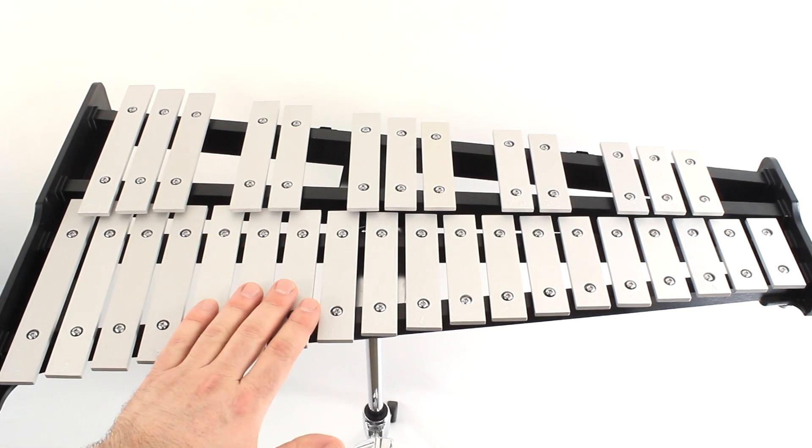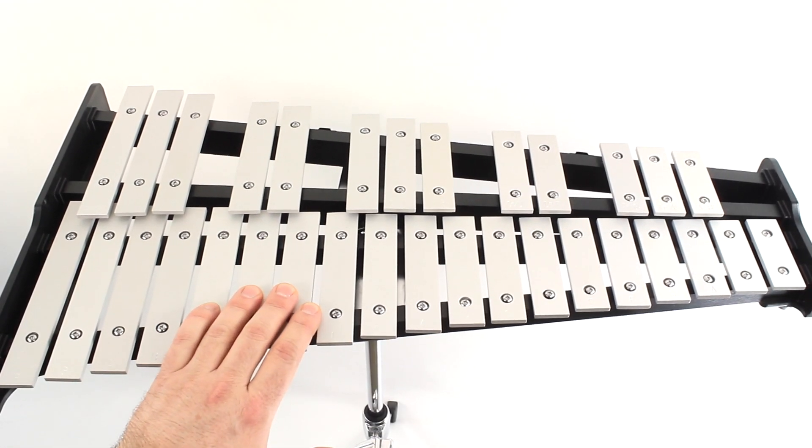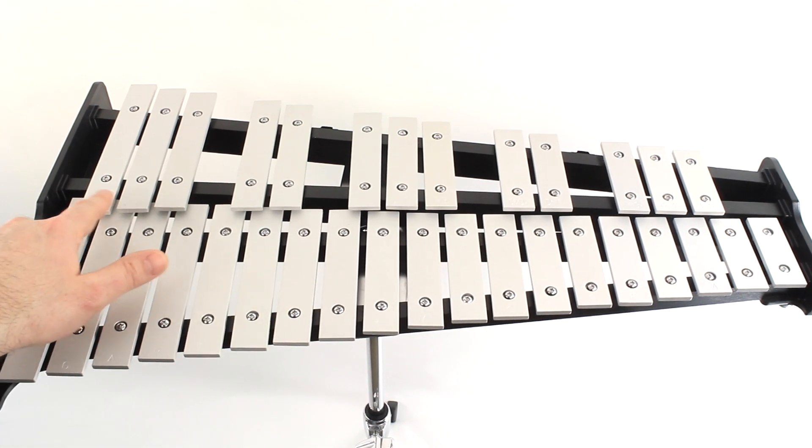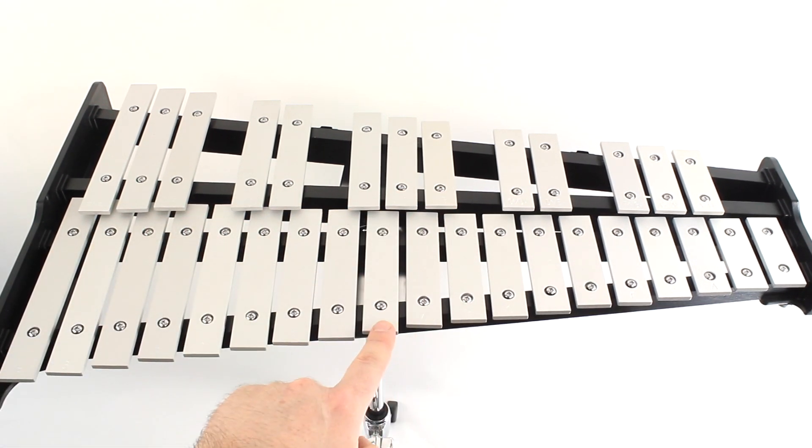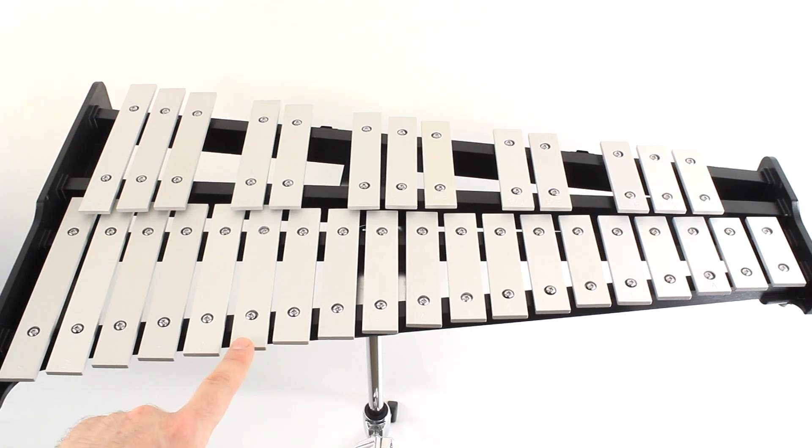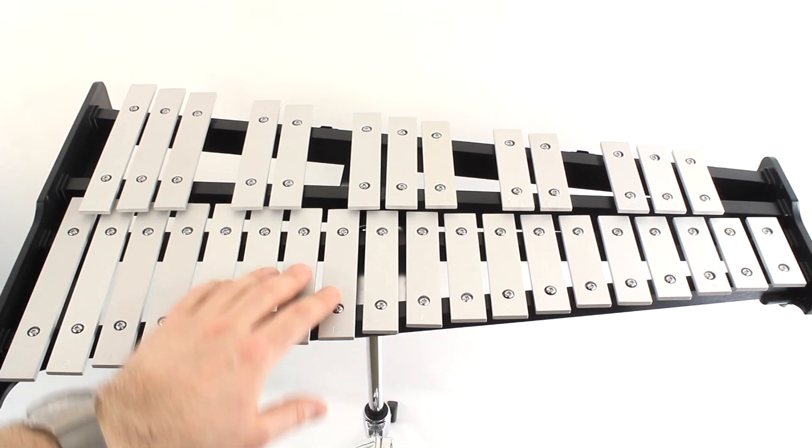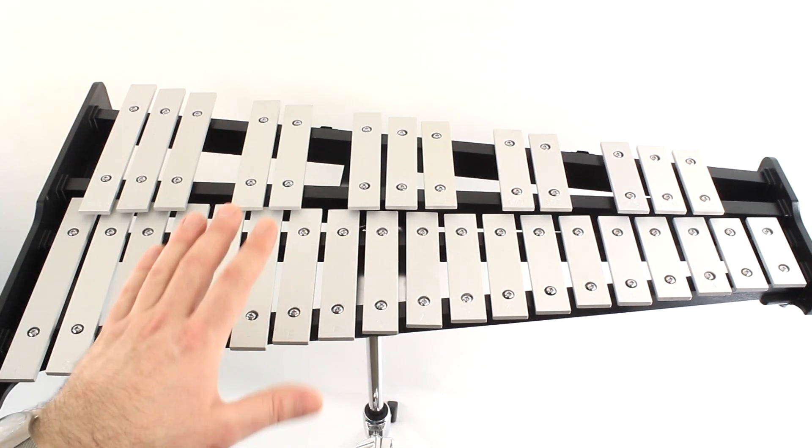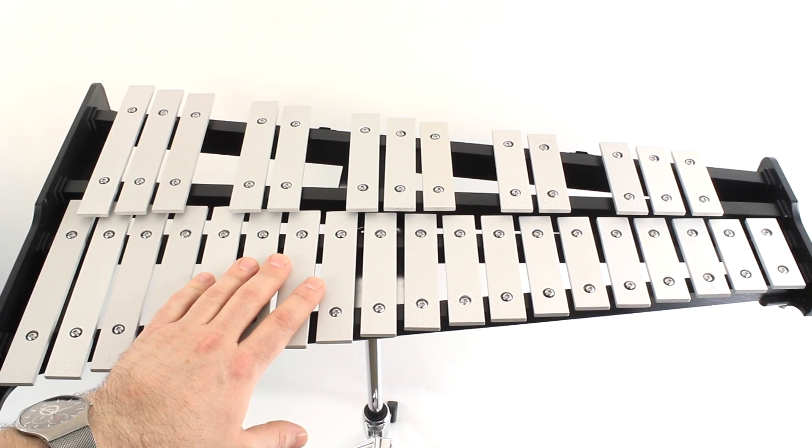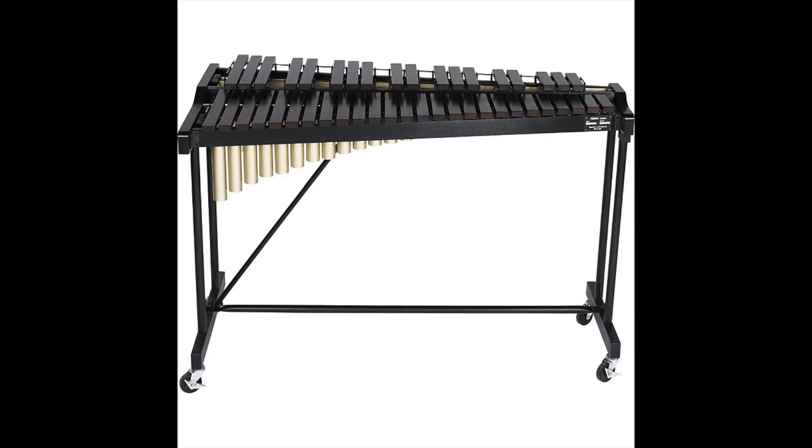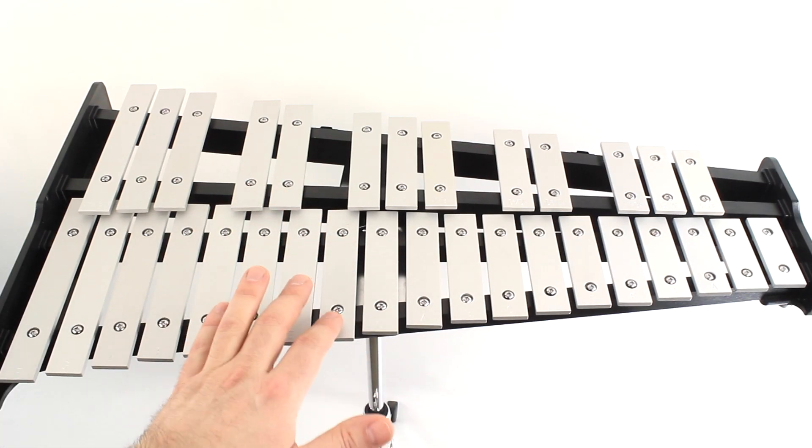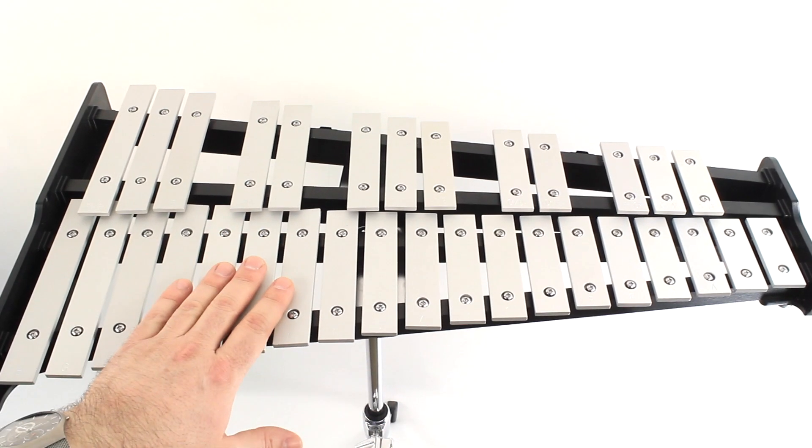Now let's talk about how we find individual notes on our bells. Some bell kits have the note names engraved right on the tone bars. Your bell kit might have the notes engraved on there or they might be blank. Either one is okay because eventually we're going to be memorizing all of our notes, because when we move on to marimba or xylophone they don't have the notes written on the bars, so we need to memorize our notes as we go.